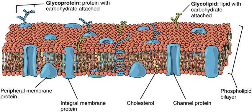A biological membrane or biomembrane is an enclosing or separating membrane that acts as a selectively permeable barrier within living things. Biological membranes, in the form of eukaryotic cell membranes, consist of a phospholipid bilayer with embedded, integral and peripheral proteins used in communication and transportation of chemicals and ions.